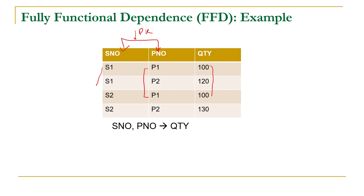Now let us consider whether quantity is fully functional dependent on this combination. Quantity is functional dependent on the combination — that is the first requirement. But it should not be functional dependent on any subset. This combination has two subsets: S number and P number. If you consider S1, there are two possible quantities for that supplier number, meaning quantity is not functional dependent on S number.